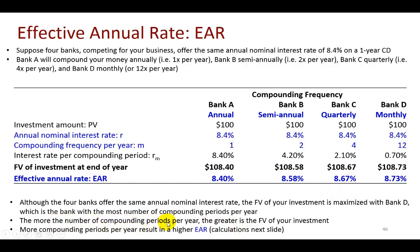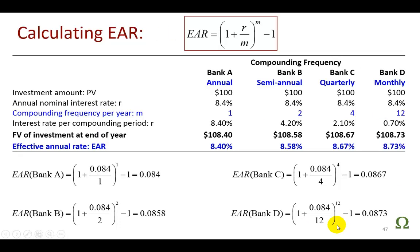And the reason is because you have the highest effective annual rate of return. The more the number of compounding periods per year, the greater is going to be the future value of your investment. And therefore, the greater would be the effective annual rate, which is defined in this manner, where M is the number of compounding periods within the year. So for bank A that compounds your money once a year, your effective rate is going to be the same as your nominal annual rate of 8.4%. For B, it's a little bit higher, 8.58%. For C, even higher. The highest is D with a rate of return of 8.73%.